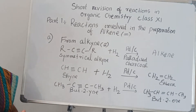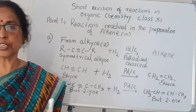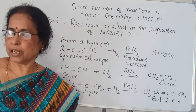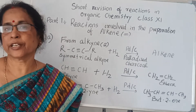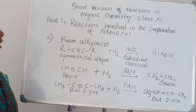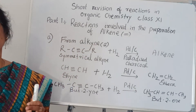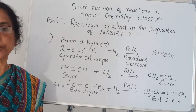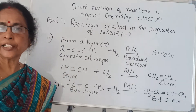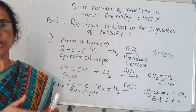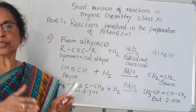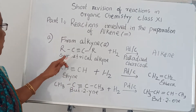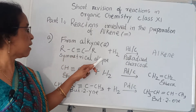You already know what is alkene. There are two types of alkene which contain a double bond: one is called symmetrical alkene and the other is called unsymmetrical alkene. Similarly, in alkyne also there are two types: symmetrical alkyne and unsymmetrical alkyne. Symmetrical alkyne means both sides of the double bond contain the same number of carbon and the same number of hydrogen.